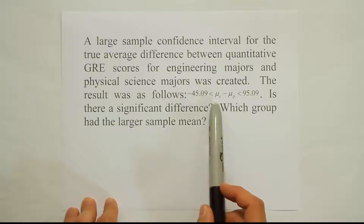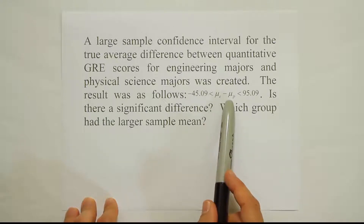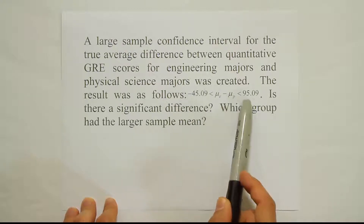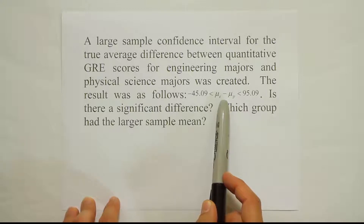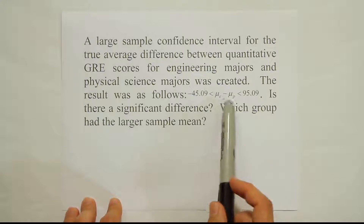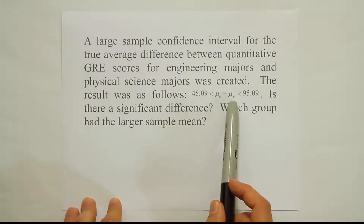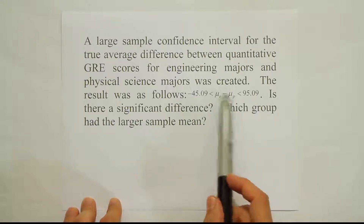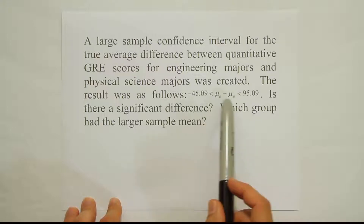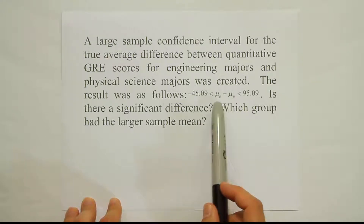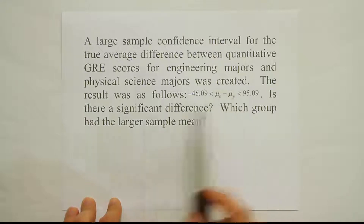First, let's look at the interval. The subtraction was done as the mean for engineers minus the mean for physical science majors. The interval is negative on the left and positive on the right, which means zero is included. So is there a significant difference? The answer is no, because the true mean difference is somewhere between these two numbers, and zero is one of the possible values. If it's zero, the two groups would have the same mean. So this interval shows we can't claim a significant difference.